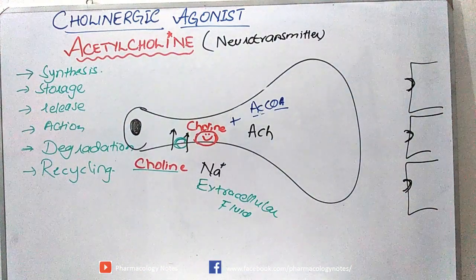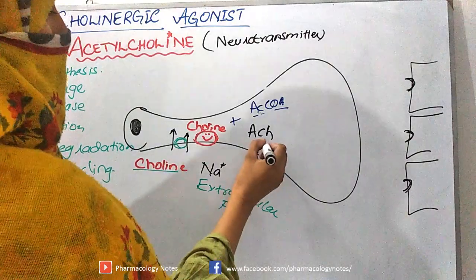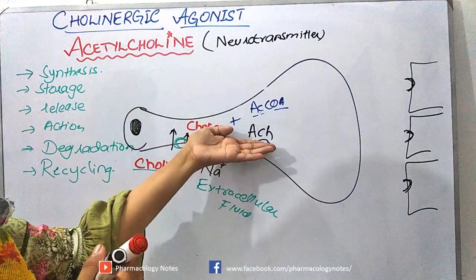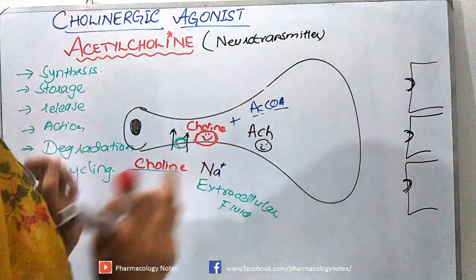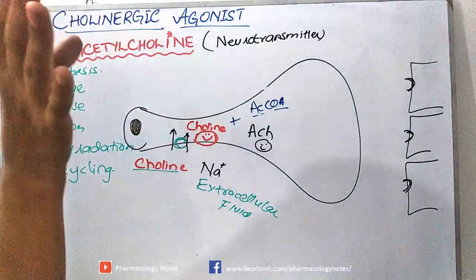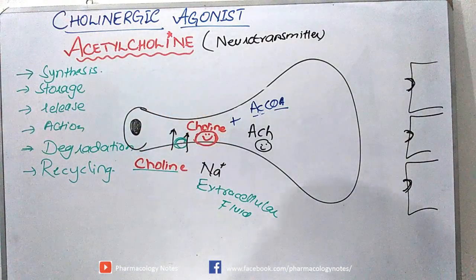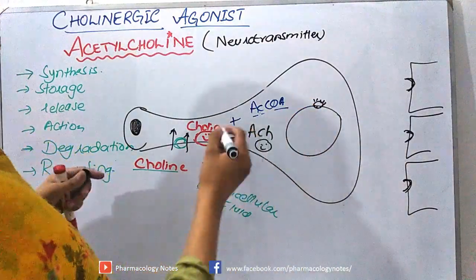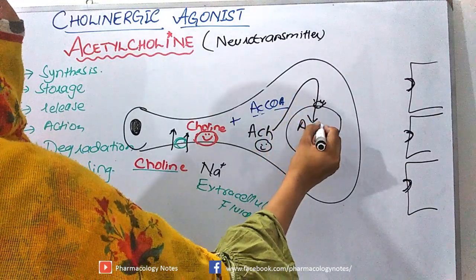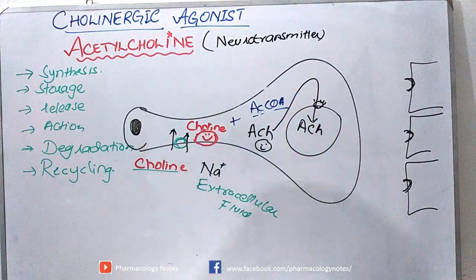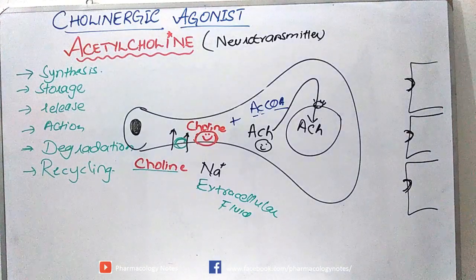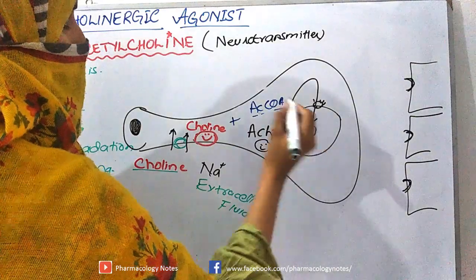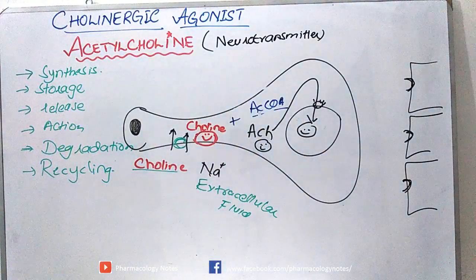Now, the acetylcholine which has been formed needs to be stored, because we don't want it to be destroyed by acetylcholinesterase, which is present in the cytosol and can break it into acetate and choline. So there is a vesicle with an energy-dependent transporter that transports this acetylcholine into the vesicle for storage.